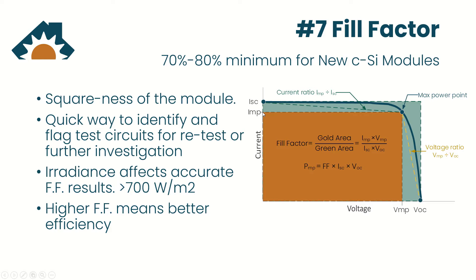So it is your IMP times VMP. You multiply that and you get this nice gold rectangle, then you multiply your ISC by your VOC and that gives you a nice green rectangle. So it's just the ratio of your gold rectangle to your green rectangle — and that is your fill factor.